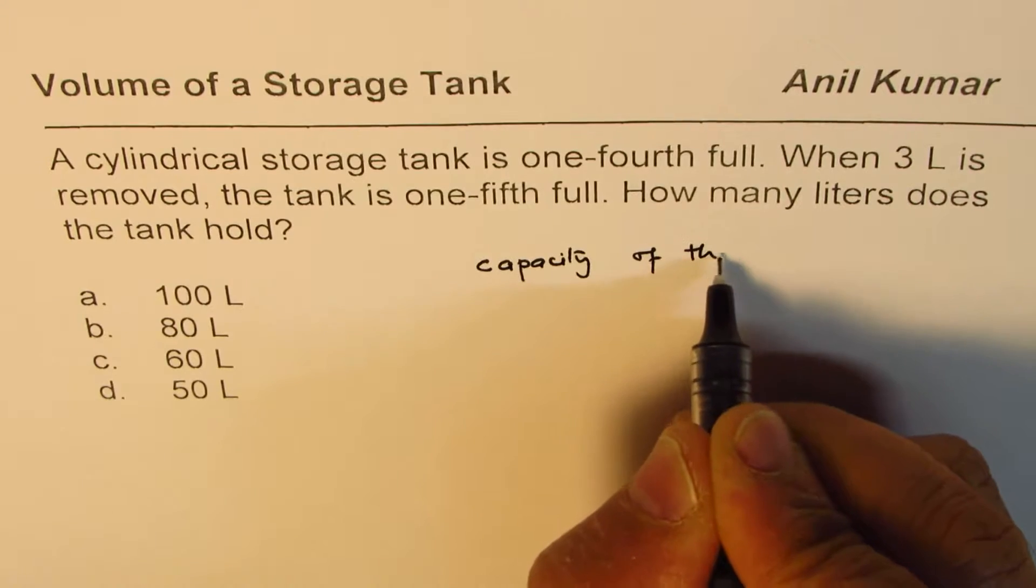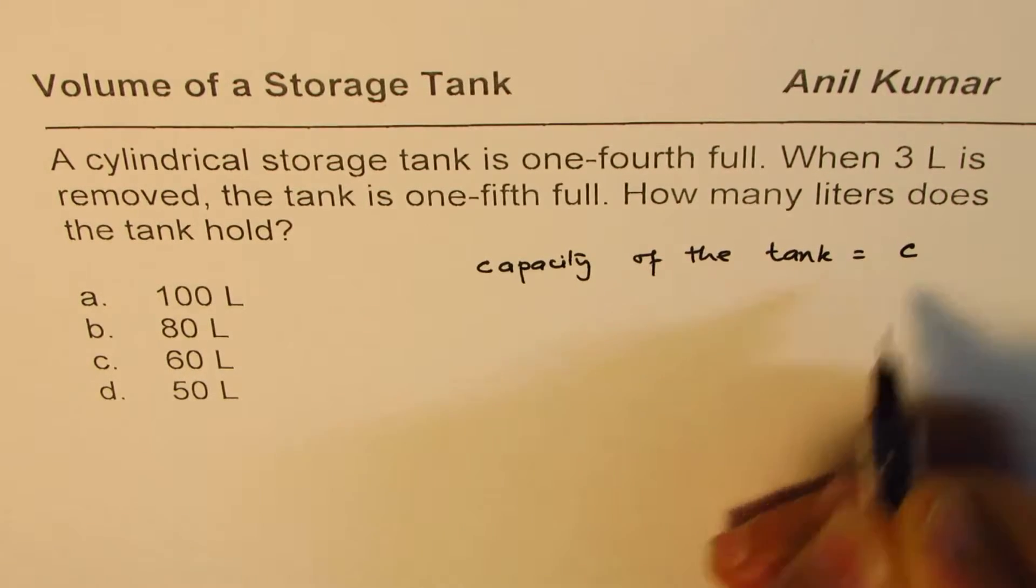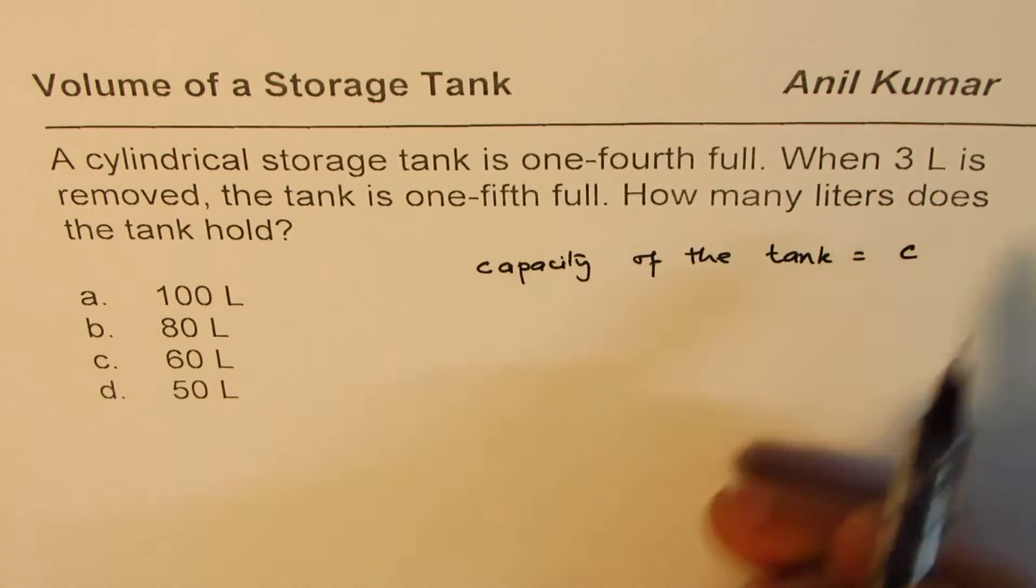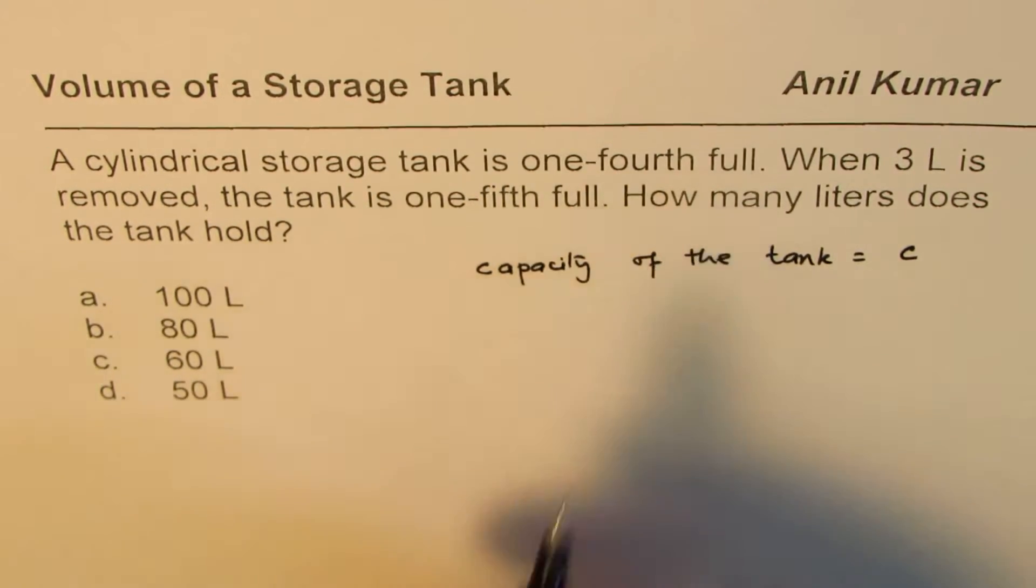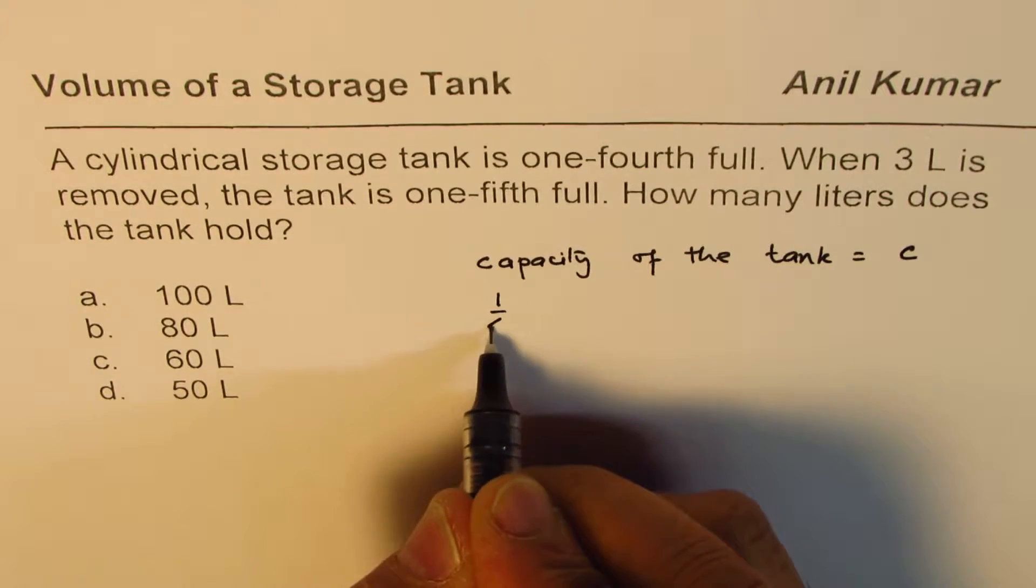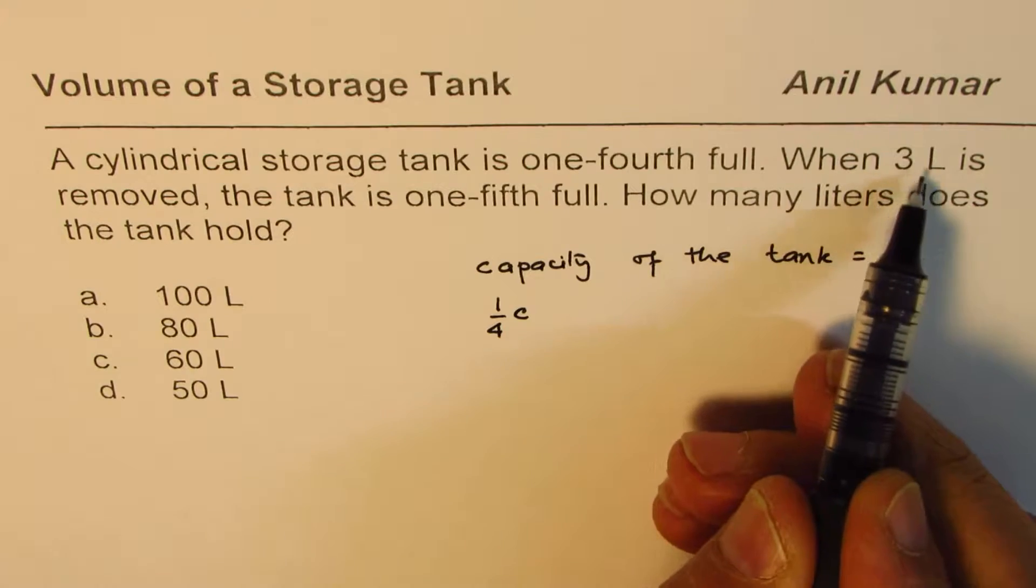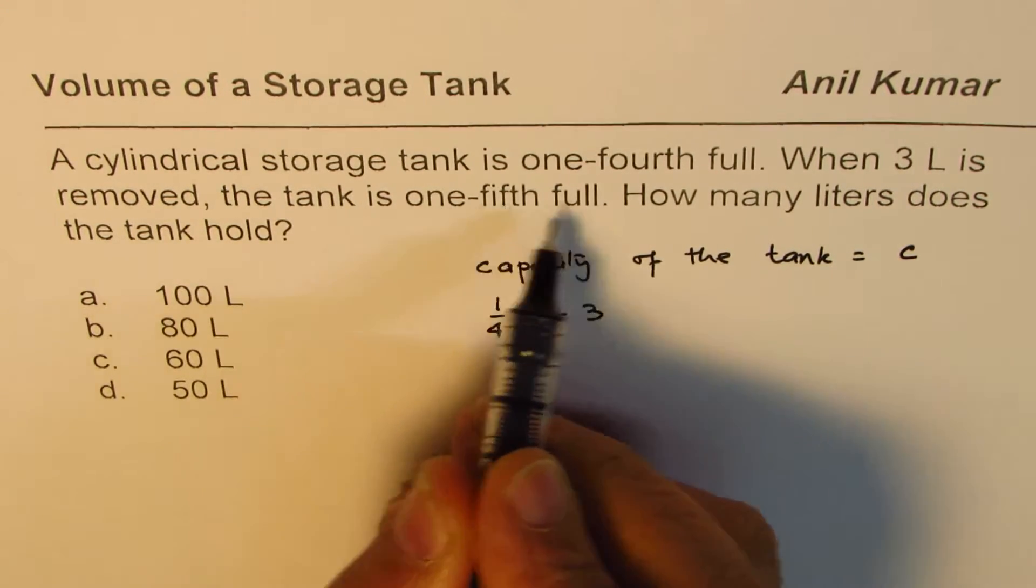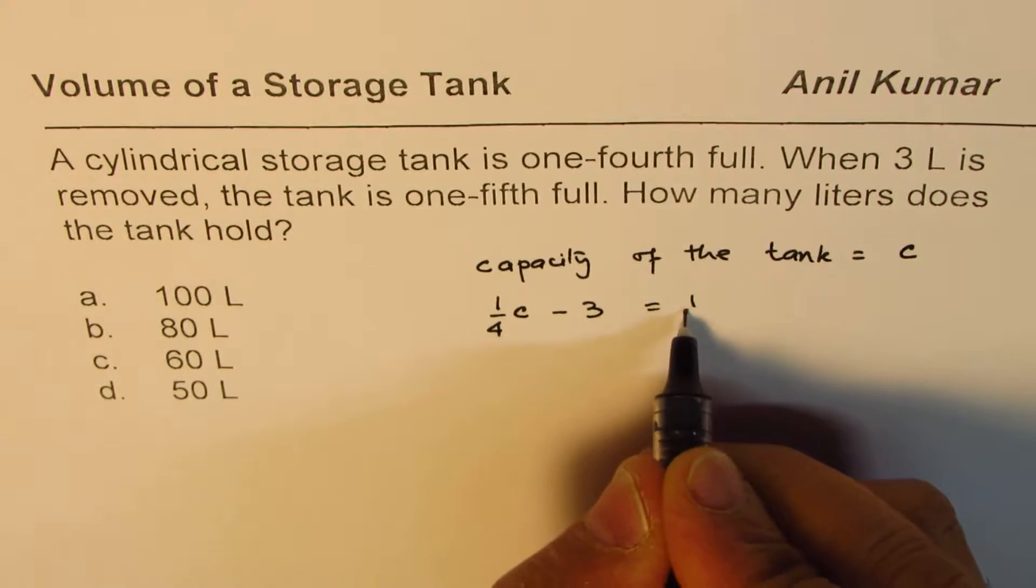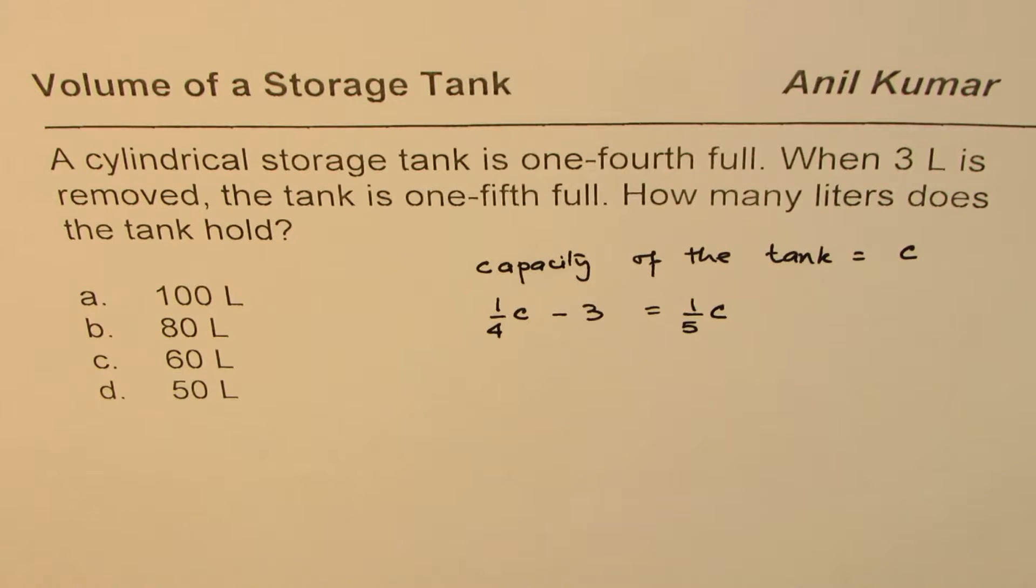In that case, what we know is that the storage tank is one-fourth full, that means one out of four of C to start with. When three liters is removed, that means minus three, the tank is one-fifth full. It becomes one-fifth of the whole capacity. So that is how you can form an equation.